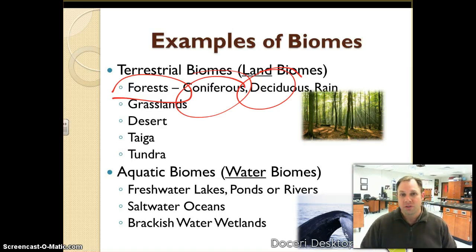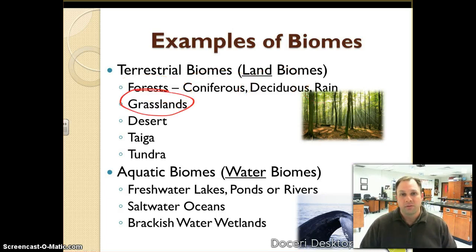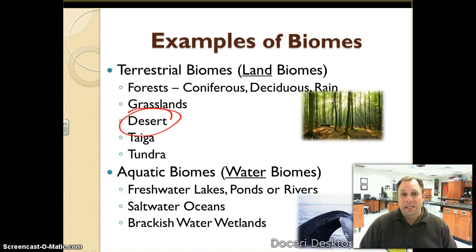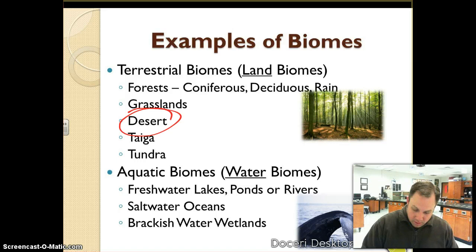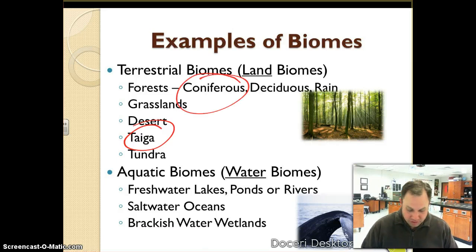Then we have our grasslands, which as the name suggests are primarily made up of grasses, small shrubs, and bushes. We have our desert, which has very little precipitation, lots of rocky sandy soil, and plants that are adapted to live with very little water. We also have our taiga, which is an area very similar to our coniferous forest — they can be considered synonymous with each other.